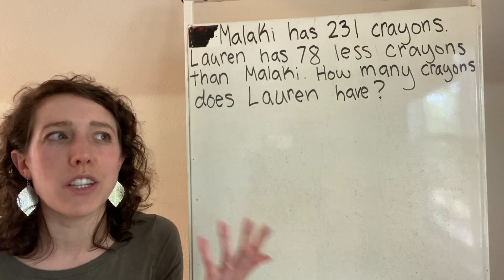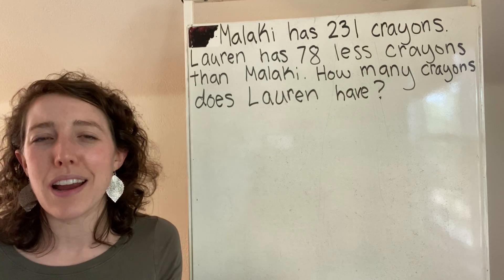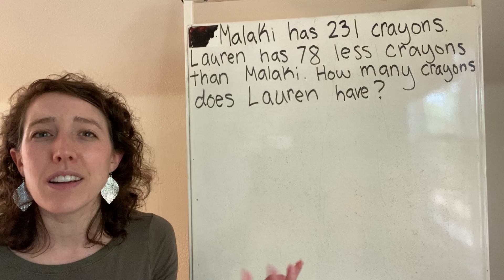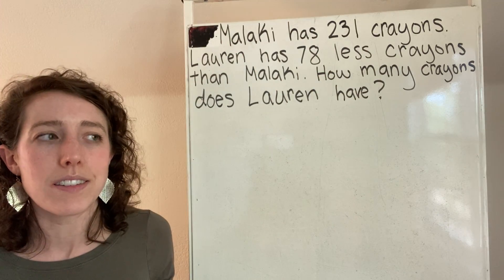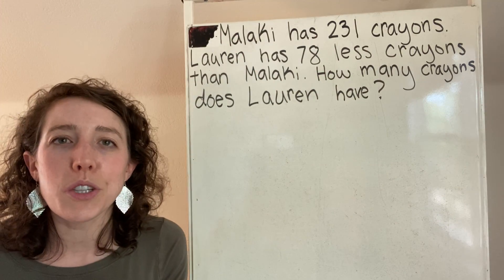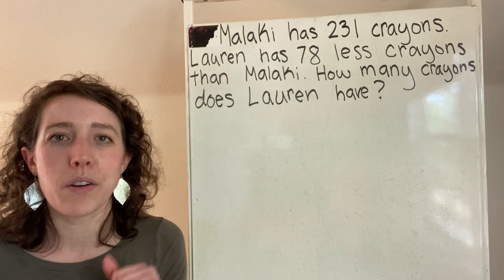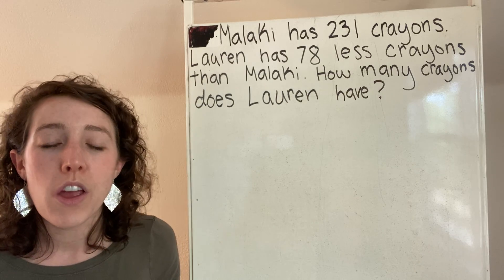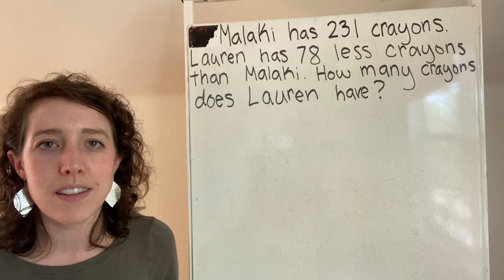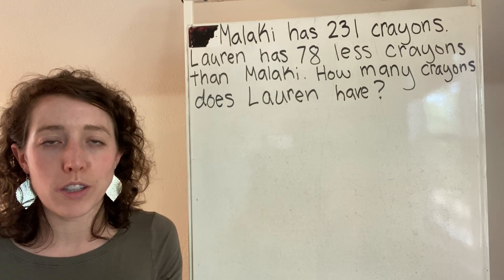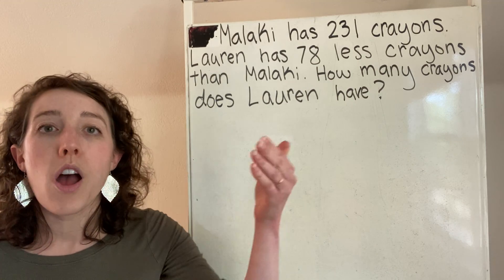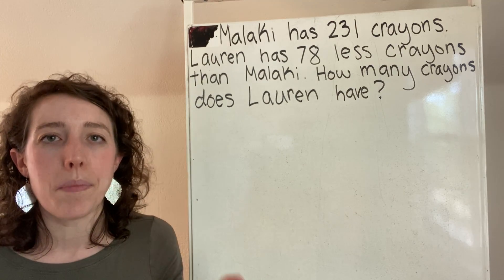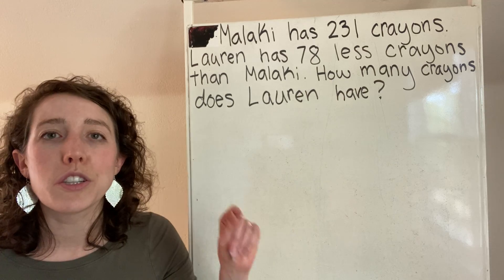Like if I told you to imagine 231 crayons, you probably couldn't really imagine that many crayons because it would just look like a mound of crayons. But if I told you to imagine seven crayons, you could probably imagine seven crayons. So here's the strategy: change the numbers so that the numbers are within 10. However, you do need to pay attention to which number is bigger.